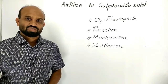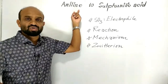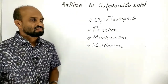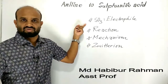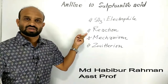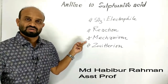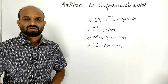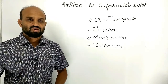Today I am going to discuss aniline to sulfonylic acid. In this lesson we are going to learn: sulfur trioxide acts as an electrophile, reaction to produce sulfonylic acid from aniline, mechanism of the reaction, and finally sulfonylic acid forms a zwitterion. So let's go to the detail.